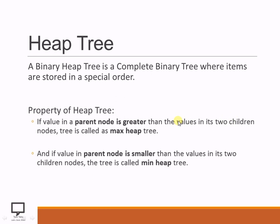If a single child is there, the parent node value should still be greater. And since this is a binary tree, we need to keep in mind that a maximum of two children will be there. So the parent's value must be greater than its children nodes. If the parent is greater, then this heap is called a max heap.